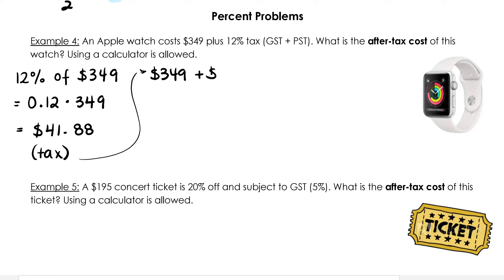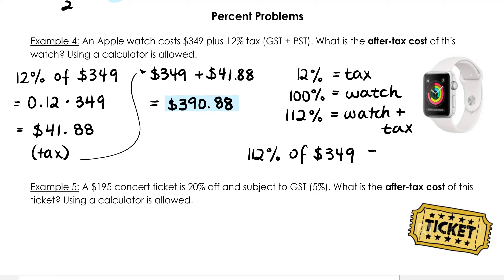$349 plus $41.88 gives us the after-tax cost of $390.88. Can you figure out a different way to solve this question? It's possible to do these two steps in one. By acknowledging that 12% gives you the tax, 100% of $349 would give you just the watch, but together, 112% of $349 would give you the watch and the tax in a single calculation. Let's try this. 112% of $349. This is equal to 1.12 times 349. Using our calculator, that gives us $390.88.